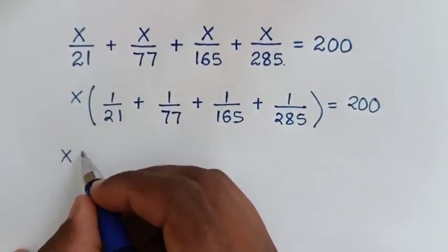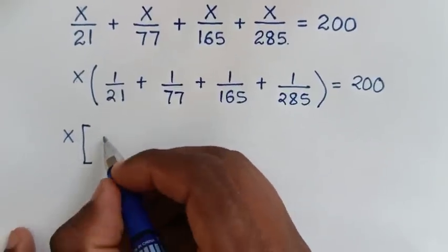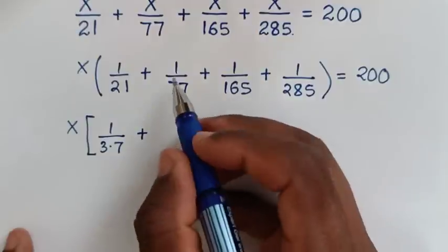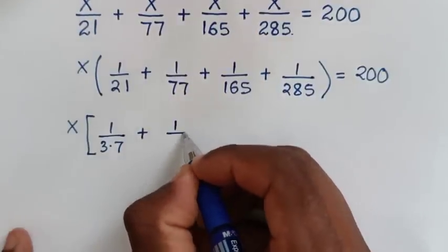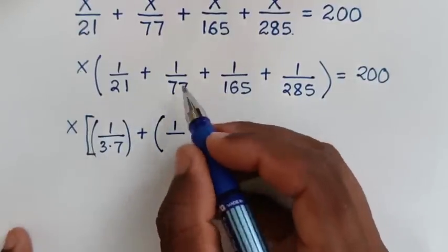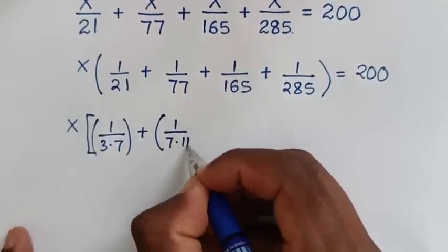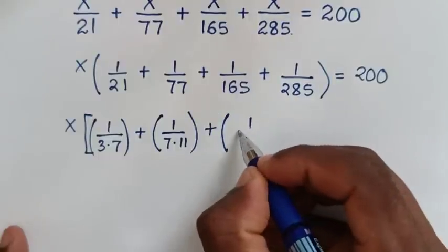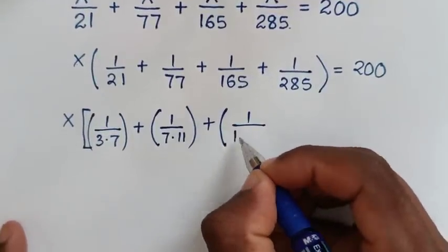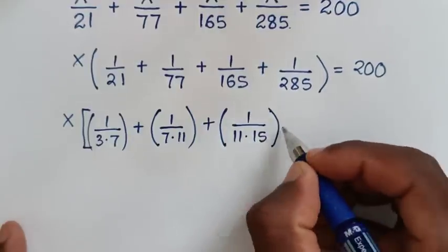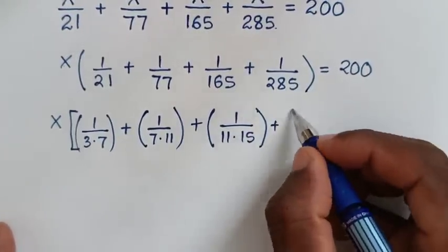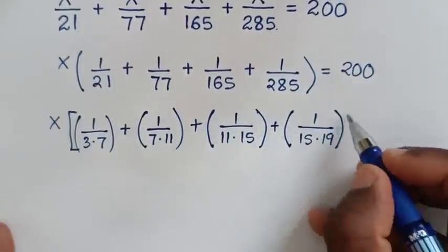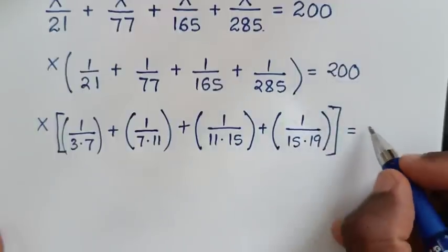In the next step, we write x times bracket: 1 over 21 is the same as 1 over 3 times 7; plus 1 over 77 is the same as 1 over 7 times 11; plus 1 over 165 is the same as 1 over 11 times 15; plus 1 over 285 is the same as 1 over 15 times 19, bracket, equals 200.